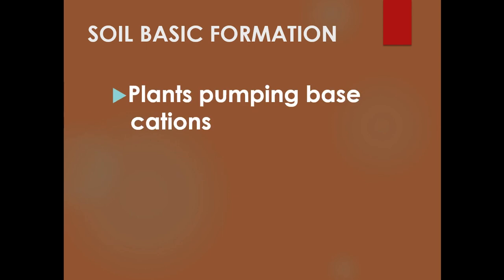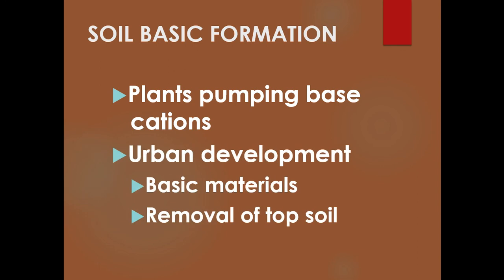Soil basic formation can be driven by plants pumping base cations. A good example is sugar maple, and another is tilia or linden — that's why it's known as the lime tree in the UK and Europe, because soil underneath linden forests will actually be more basic than under a conifer forest. In urban soils, urban development can be a big driver of soil basic formation through the use of basic materials like cement washout, as well as the removal of topsoil. That A-horizon typically has more organic matter and is more acidic, so removing it leaves a base material often high in carbonates and more basic.